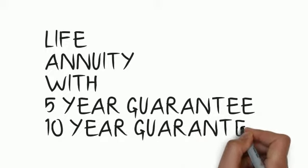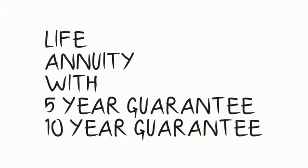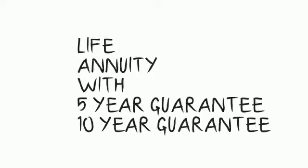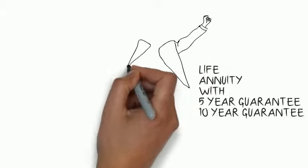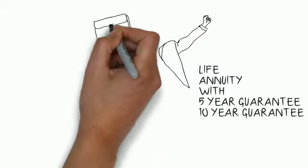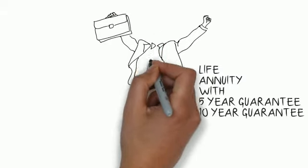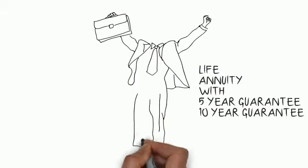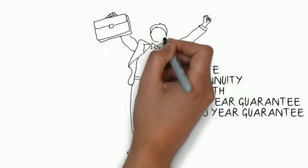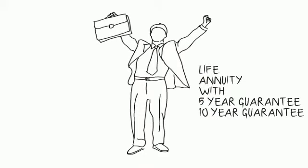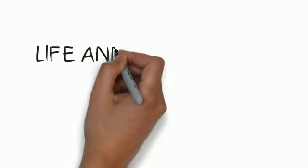If you die before the end of 10 years, it continues paying until the end of 10 years. If you out-survive 10 years, then it will pay for 10 years, then continue to pay until you die. That's a life annuity with a guarantee of 10 years. Similarly, you can have guarantees of 5 years, 10 years, 15 years, 25 years — whatever you want.